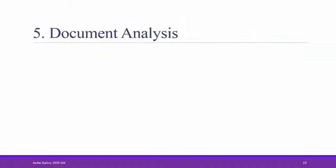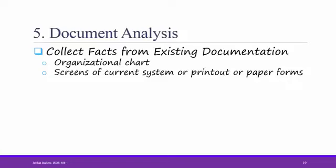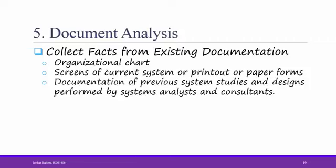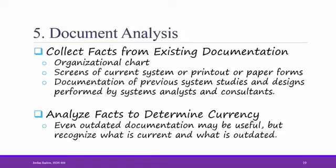The last common technique for gathering requirements is document analysis. This means that you take a document that the organization is currently using, whether that's paper or digital file, and you collect facts from that existing documentation. For example, you could look at an organizational chart, screens of the current system or printout of paper forms, like invoices or sales receipts, or documentation of previous system studies and designs performed by systems analysts and consultants in the past. It's important that you determine how current the documents are. Even outdated documentation may be useful, but recognize what is current and what is outdated. If you're looking at an old paper form, consider that the form might be used in a different way than it used to be. Clarify all these types of assumptions directly with the users.